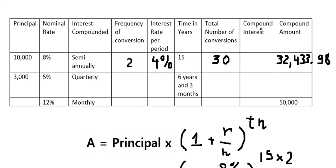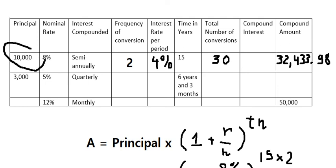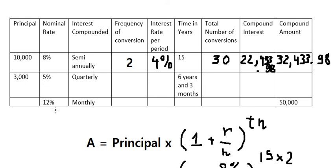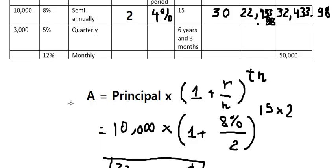For compound interest, we take the compound amount and subtract the principal of 10,000, giving us 22,433.98. That's the answer for question number one. For questions two and three we will do the same process.